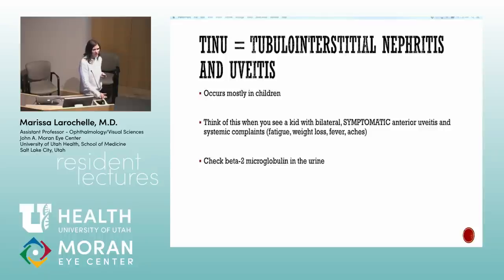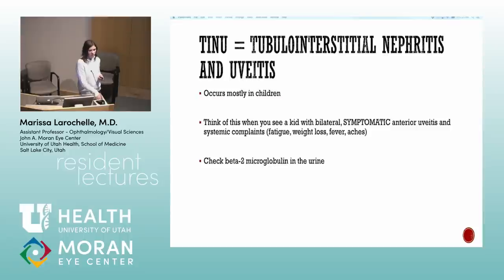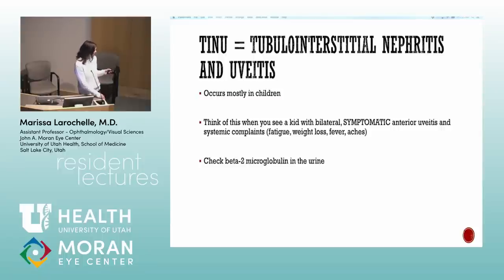A kid with bilateral symptomatic anterior uveitis is not your JIA patient — think tubulointerstitial nephritis and uveitis (TINU). Even a young adult with simultaneous onset of symptomatic anterior uveitis should raise suspicion. Standard labs and UA can be totally normal, but urine beta-2 microglobulin can be ten thousand times the upper limit of normal. Official diagnosis requires kidney biopsy, though criteria for probable TINU don't require it, and patients tend to do well on immunosuppression.